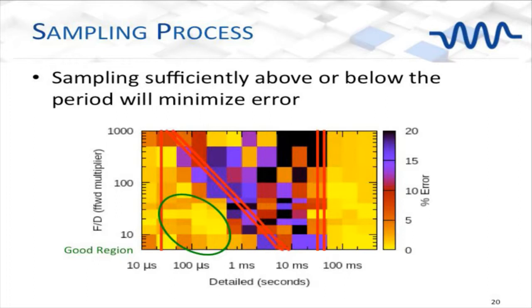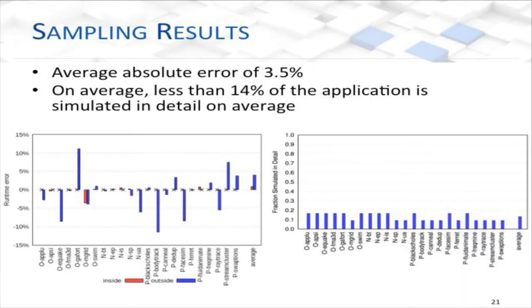The results are pretty good — error is quite low, around 3.5%, and on average we simulated less than 14% of the application. This enables us to simulate a multi-threaded application and understand it at the level of detail of a microarchitectural simulator. Now we can look at larger numbers of software applications and microarchitectural configurations. But we wanted to go a little bit further.